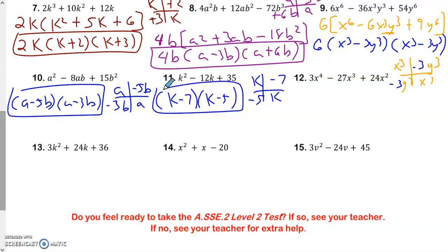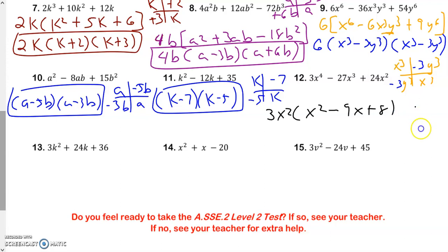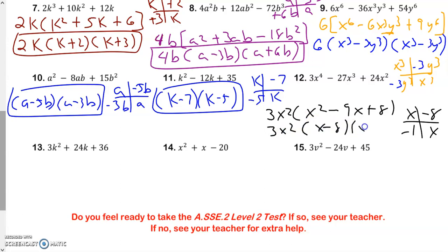Taking a look at the next one. Can I take something out of all of them? I can — I can take out a 3 and an x to the 2nd. And that's going to leave me x to the 2nd minus 9x plus 8, because 27 divided by 3 is 9, and 24 divided by 3 is 8. I'm going to use the box — x and x. What two numbers multiply get you 8 that get you to a negative 9? That's a minus 8 and a minus 1. Negative 8 times negative 1 is positive 8, and if you add them together you get negative 9. So here would be my answer.